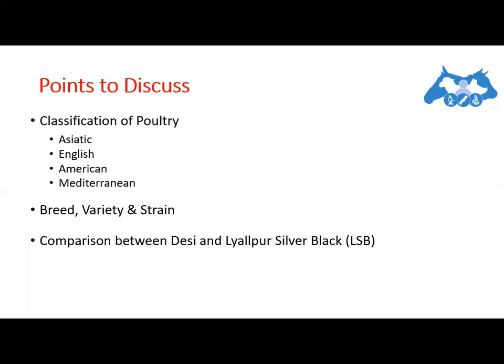Now I will explain the difference between breed, variety, and strain. A breed is a group of birds which belong to the same place of origin and have similar characteristics including body shape, body size, and skin color. For example, White Leghorn is a breed, and Black Minorca is another breed.